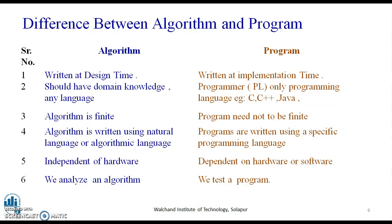Now, algorithm is finite. Program need not be finite. Algorithm is written using natural language or algorithmic language. As I said some time back, it can be any vernacular language. Whereas a program is written using specific syntax of that particular programming language. They are not written in vernacular language. They are written as per the standard coding convention. One important thing: The algorithm is independent of the hardware and the software. Whereas the program is dependent on the hardware or the software. For running a particular program in C, you require its software, that is Turbo C, C++. And finally, the most important thing is that we analyze an algorithm. We test a program.